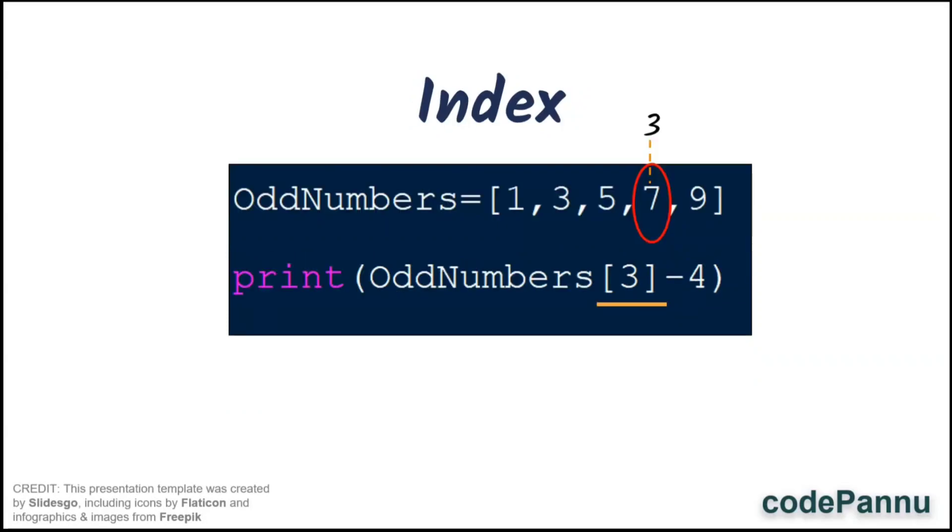Then to subtract 4 from the item we give minus 4 after the index. Then put them inside the print statement.